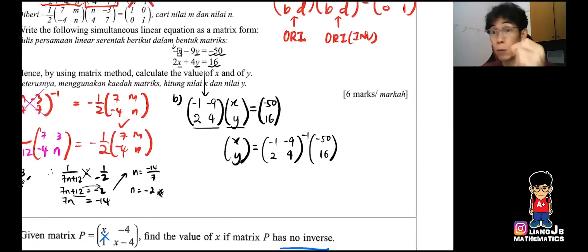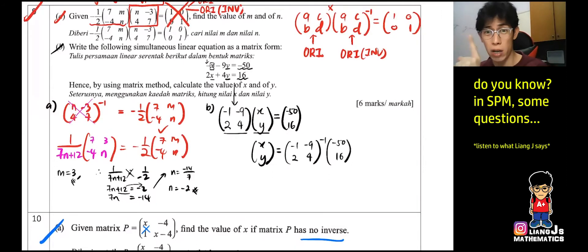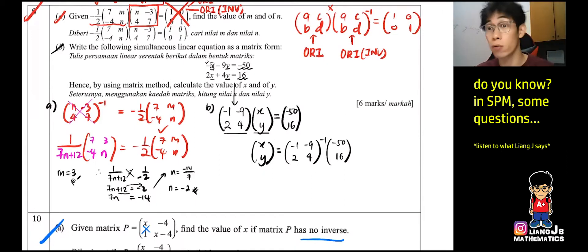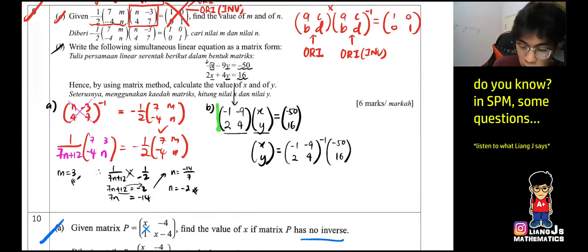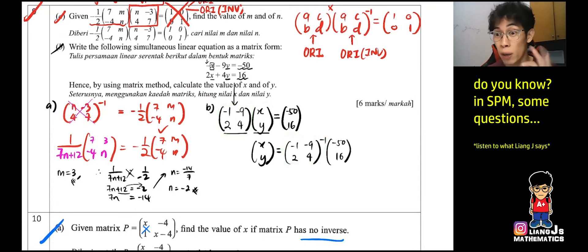There is something you may not be aware of: you can skip certain workings in SPM under specific conditions. This is not applicable every time — only in certain cases. Notice that when you bring the matrix to the other side, you get the inverse.